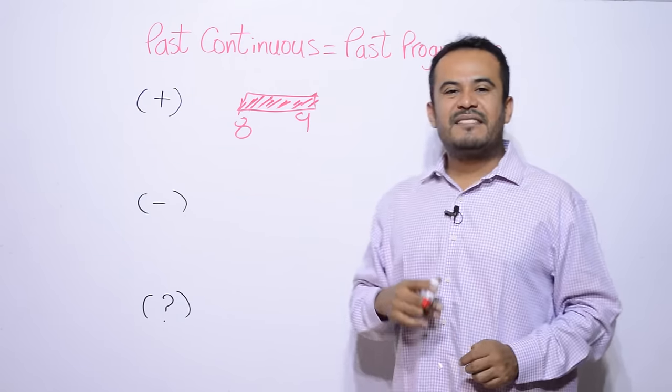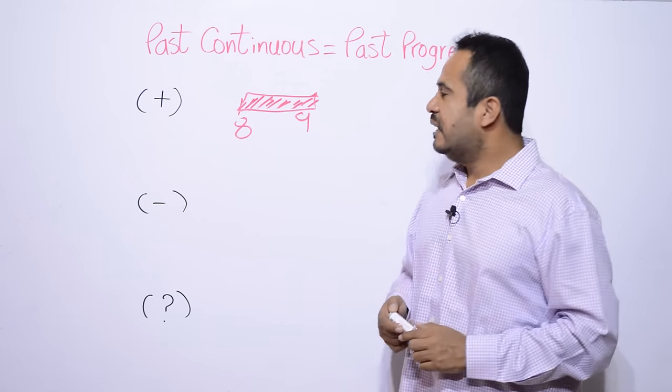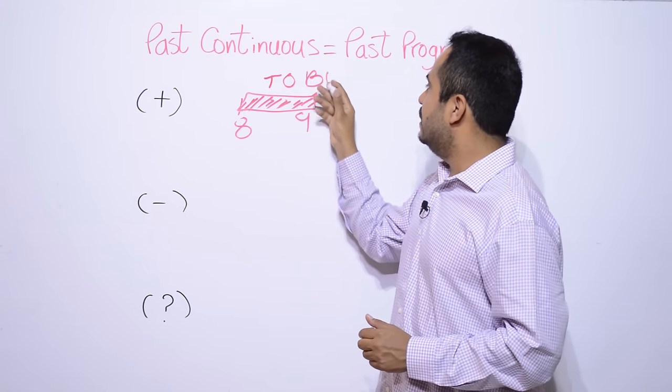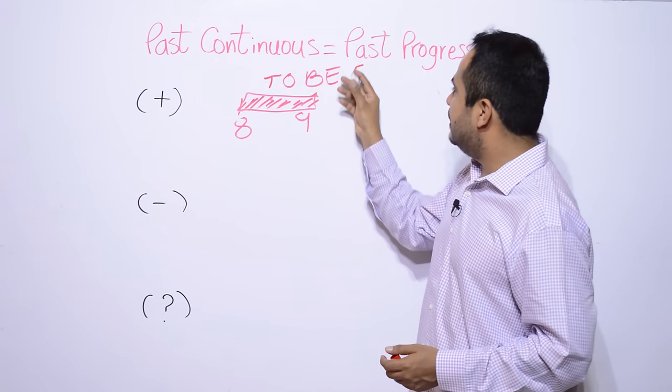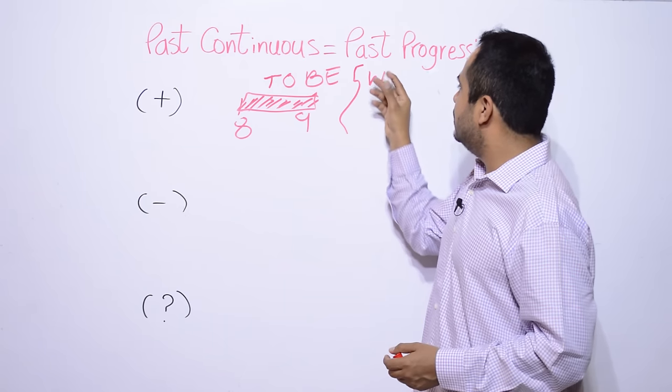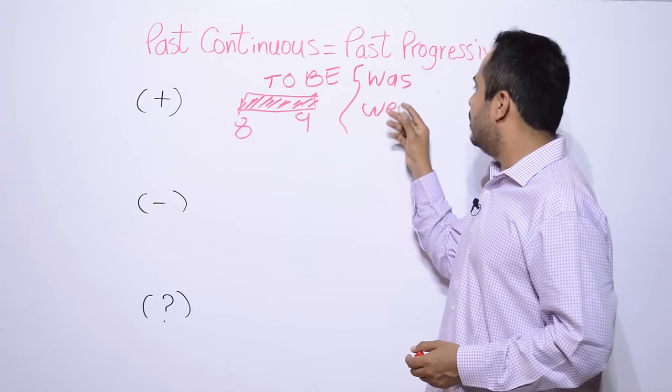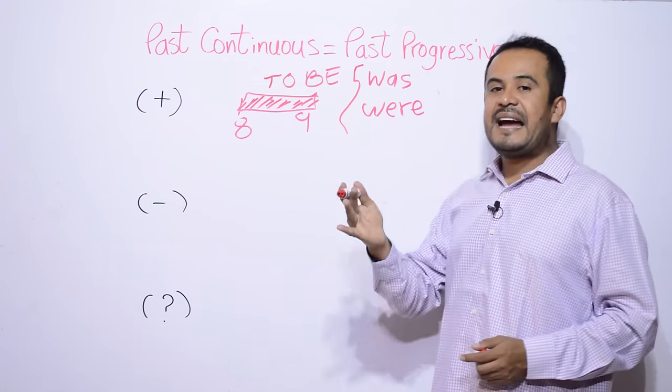Otra cosa. El pasado continuo siempre lleva verbo to be. Siempre, siempre. El verbo to be es el verbo ser o estar. To be. Recordamos que el verbo to be en inglés es de dos formas. Es was y were.